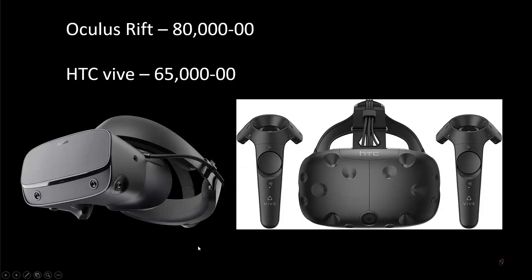Other devices like HTC Vive and Oculus Rift have cameras built into the headset — they don't need a mobile phone. The headset itself has the display along with all the sensors. The Oculus Rift costs around 80,000 rupees and HTC Vive costs around 65,000 rupees.